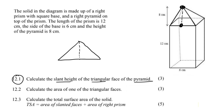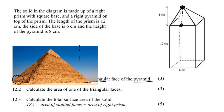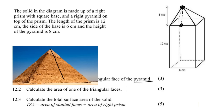It's going down the side — almost like you're in Egypt and there's a pyramid and you are sliding down the side of the pyramid, not falling through the middle. So the slanted height goes from the top down the side of the shape. That's what they mean when they say the slanted height.